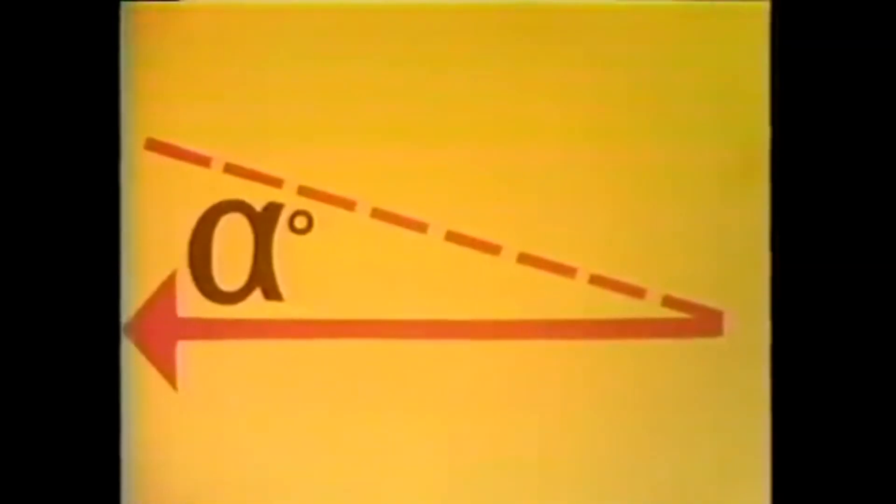Let's tag angle of attack with an angle and the Greek letter alpha. As you recall, alpha is simply the angle formed between the relative wind and the chord line of the airfoil. But its importance is in the fact that even small variations affect the amount of lift.